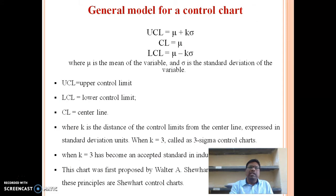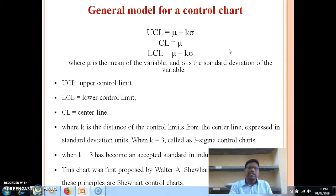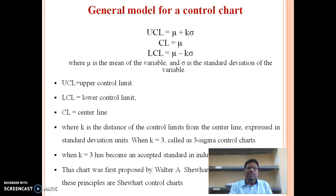The general model for a control chart has three lines: UCL equals mu plus k sigma, central line equals mu, and LCL equals mu minus k sigma. Here mu is the mean of the variable and sigma is the standard deviation. UCL stands for upper control limit, LCL for lower control limit, and CL is the central line. K is the distance of the control limits from the central line expressed in standard deviation units. When k equals three, these are called three-sigma control limits, which has become an accepted standard in industry. This chart was first proposed by Walter Shewhart, and charts built on these principles are called Shewhart control charts.